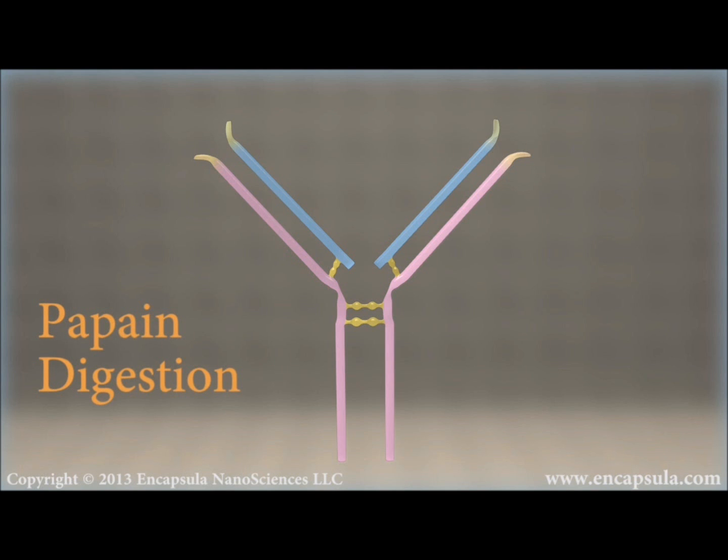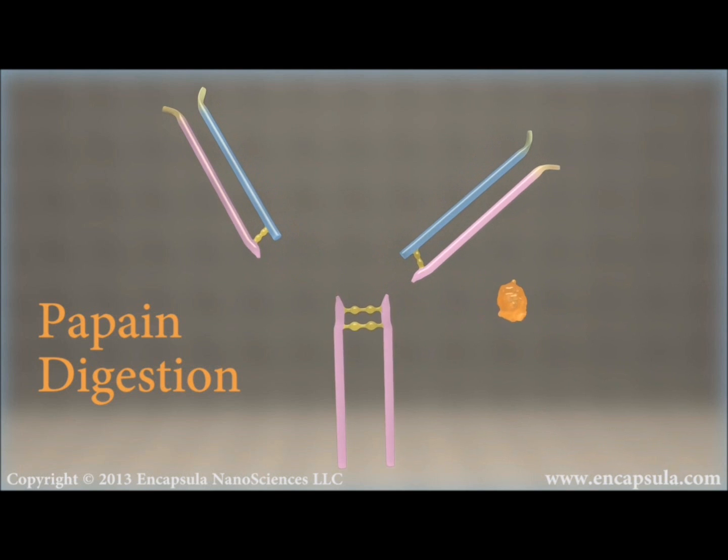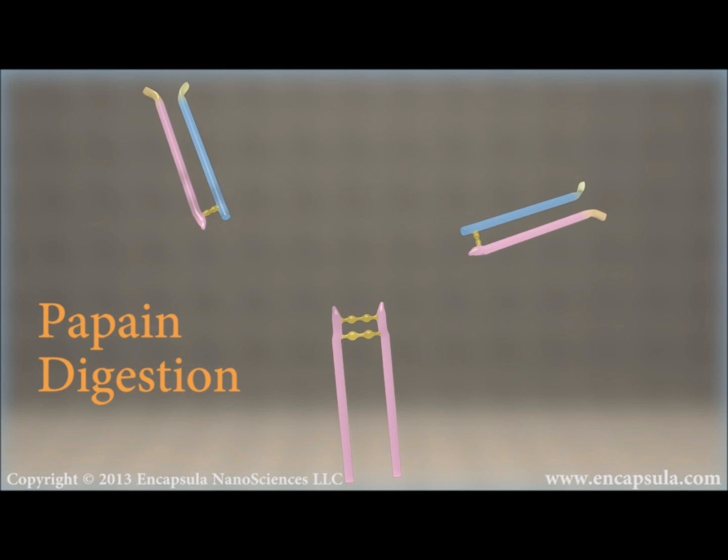Pepain is a thiol endopeptidase. When immunoglobulin G molecules are incubated with pepain in the presence of a reducing agent, one or more peptide bonds in the hinge region are split, producing three fragments of similar size: two Fab' and one Fc.